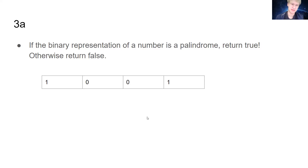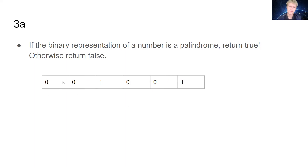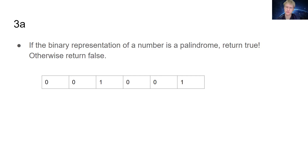One thing to keep in mind for this problem — what makes it more interesting — is that this is still a palindrome. We ignore leading zeros here, because these zeros don't actually contribute; they don't change the value of the number in any way. So this is still a palindrome because the actual number is still 1001. We can't just go through all the bits of the number; we need to account for the fact that we're only going up to the leading one, the leftmost one. This makes this question a little more interesting than other palindrome questions you may have seen.